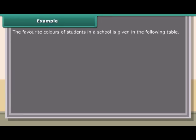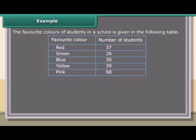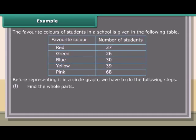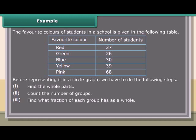Example 1. The favorite colors of students in a school is given in the following table. Before representing it in a circle graph, we have to do the following steps: find the whole parts, count the number of groups, find what fraction of each group has as a whole, and find the central angle and draw the graph according to it.